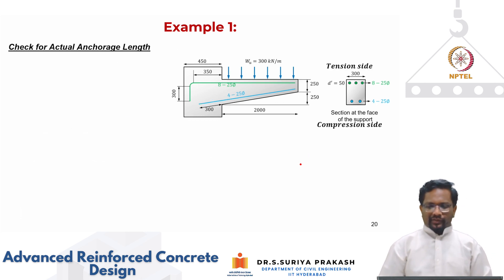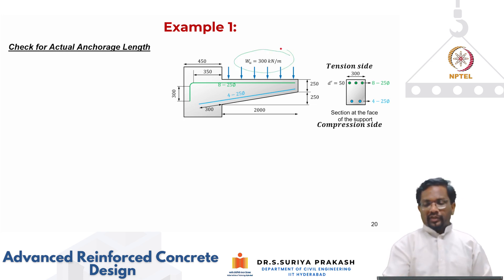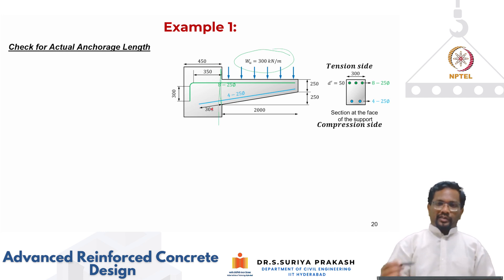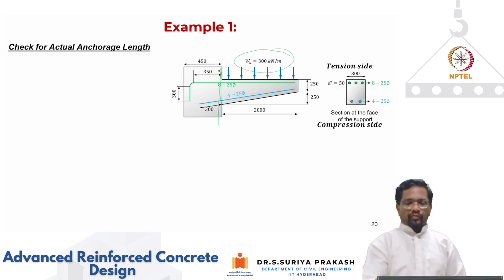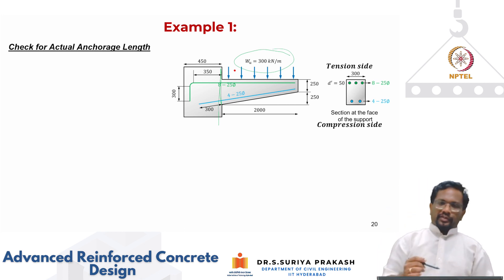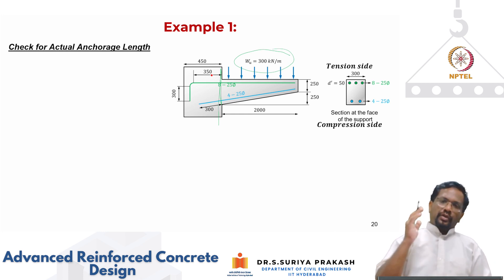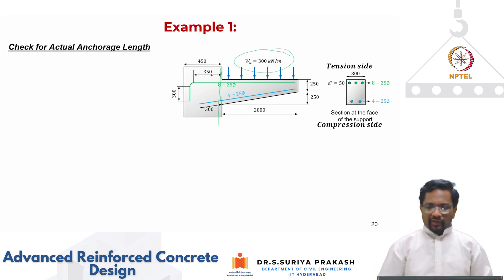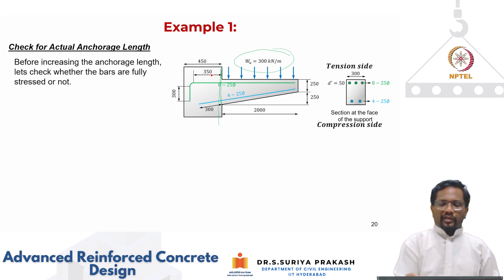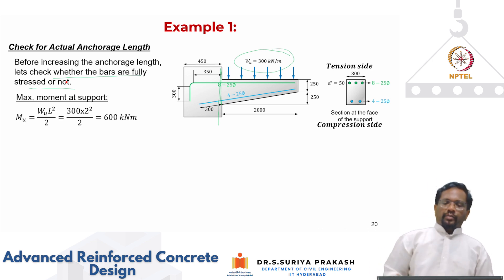Now, how do we fix this? One approach: if more steel is provided than actually required by the demand, then the development length can be reduced, because we only need to develop the stress corresponding to the actual bending moment. However, at critical sections it is generally best to provide the full development length to develop the actual yield stress. Let us check whether the bars are fully stressed for the given demand.